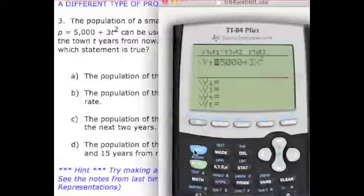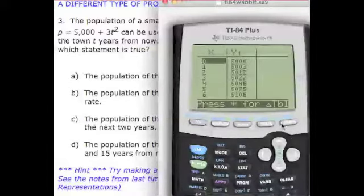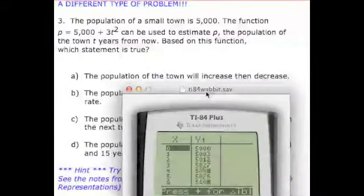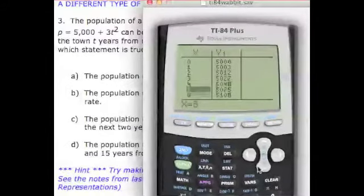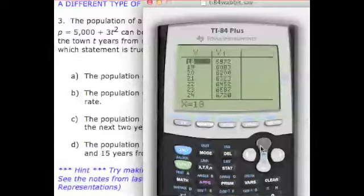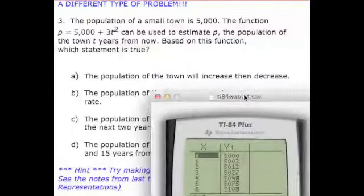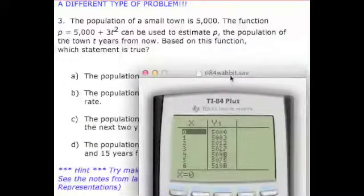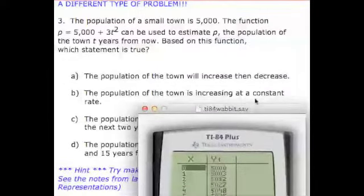Now, what I want you to do is make a table. So remember that second graph. And let's find out which one of these makes sense. The population of the town will increase, then decrease. Well, if we look at it, and you keep on going, you'll notice the population is just always increasing from 0. So A cannot be the right answer choice. And again, you can scroll up and down using your arrow buttons. B, the population of the town is increasing at a constant rate. Now, constant means it's increasing by the same amount every single time. If we look at the table, it goes from 5,000 to 5,003 to 5,012 to 5,027 to 5,048. It's not increasing by the exact same amount every single time. So B cannot be the correct answer either.